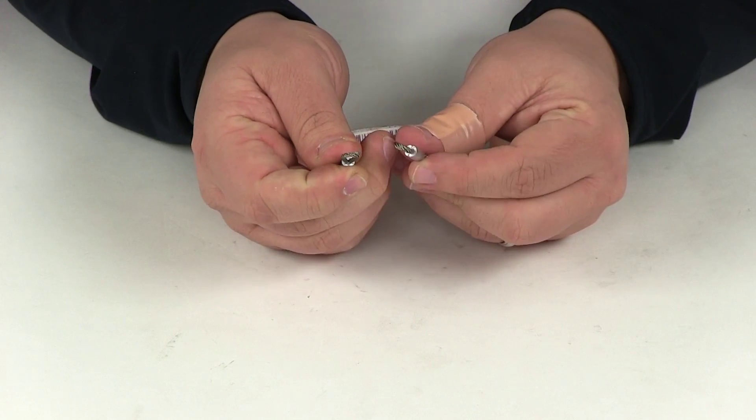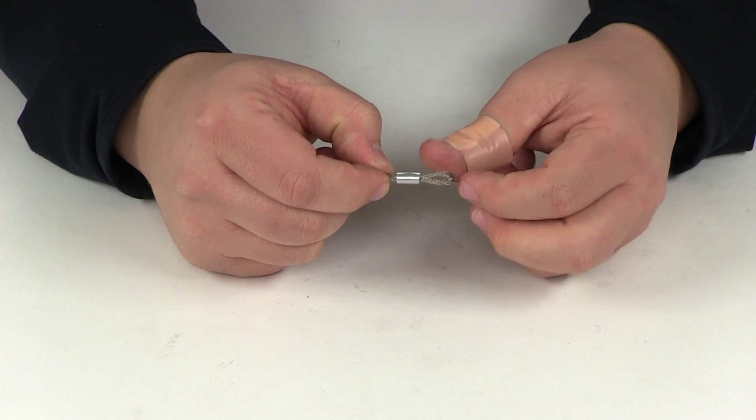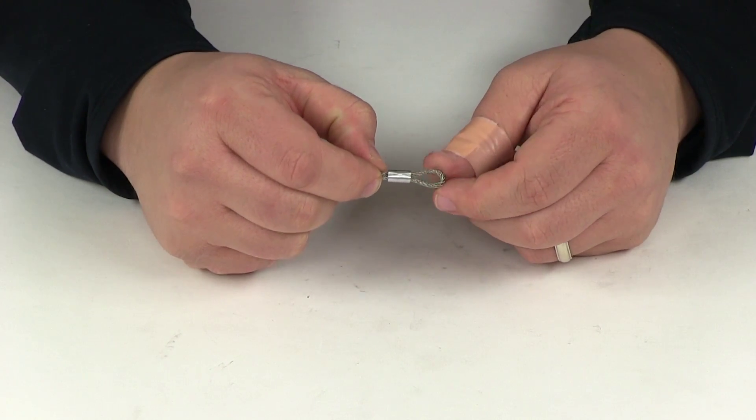Here on each end it's going to feature a closed loop end as well as a nice crimp design, so it's going to make sure that the cable stays securely in place. That way the loop does not come undone.